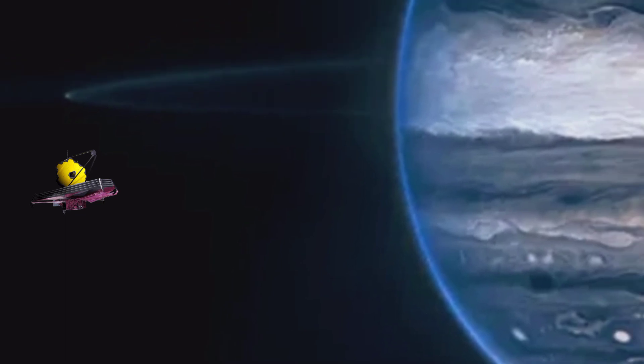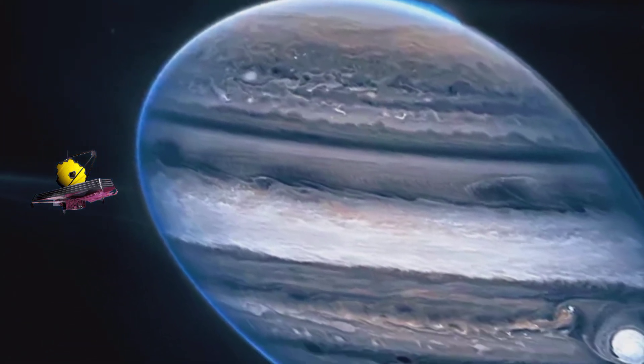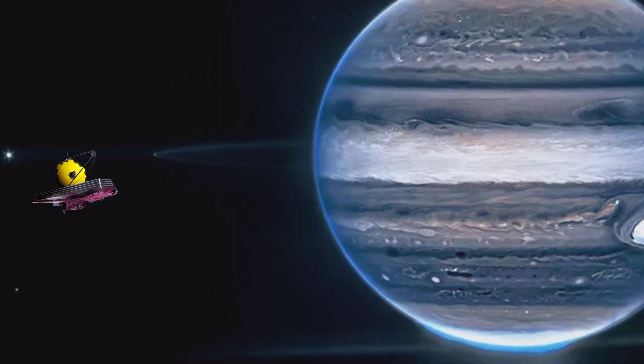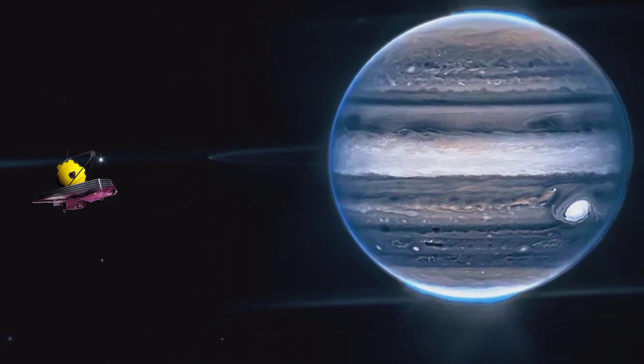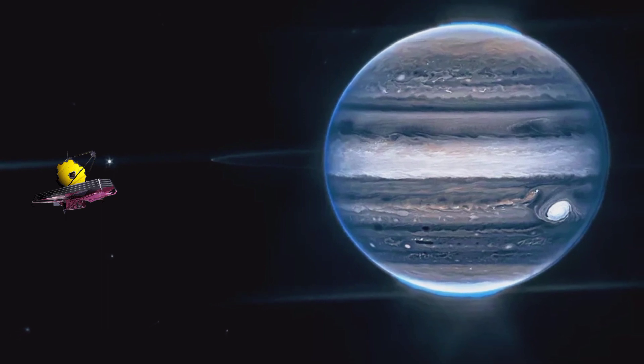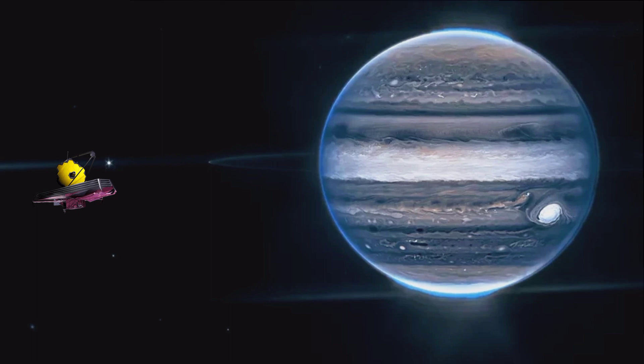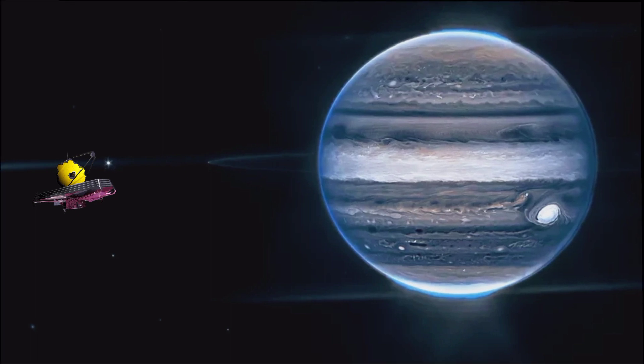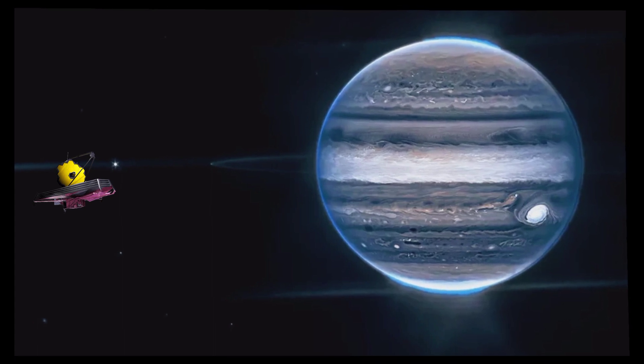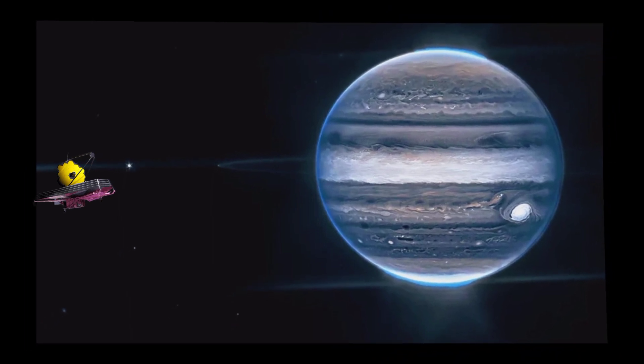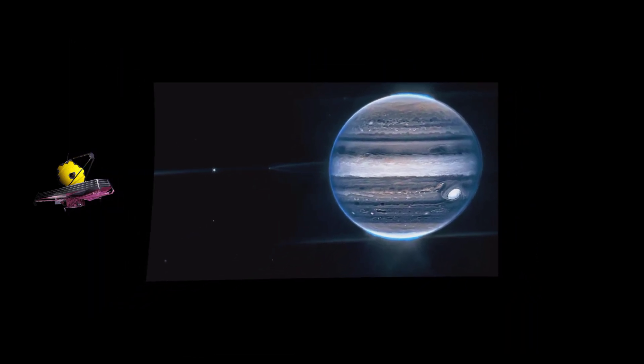Number 8. When JWST set its sights on a target a little closer to home, astronomers were delighted with the results. This composite image of Jupiter was captured with the observatory's near-infrared camera, NIRCam, and shows the Jovian system in spectacular detail. Here you can see the beautiful aurora around the poles and the faint ring circling the gas giant. Two of Jupiter's moons are also visible: Amalthea is the bright dot on the left, and Adrastea is the faint dot at the edge of the rings, between Amalthea and Jupiter.